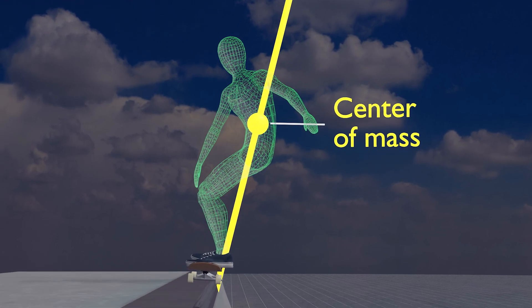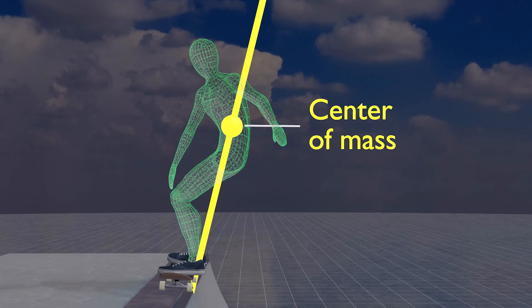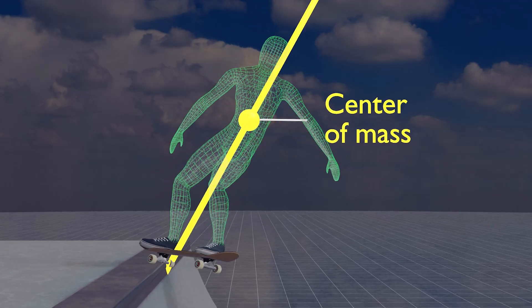Remember, keep your center of mass inside the ramp, and lock with your back heel. If you do both, there is no logical way that you will hang up with or without being able to see it.